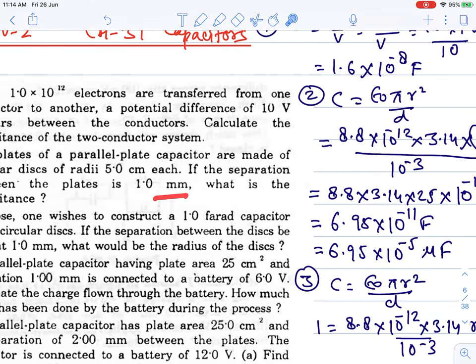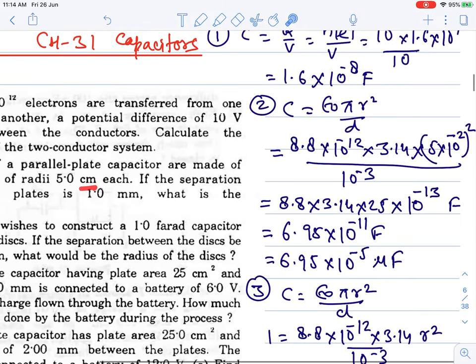Put values in SI units. This is millimeter, so it becomes 10^-3 in the power. This is centimeter, so it becomes 10^-2 in the power. Square will also be there because of the area.